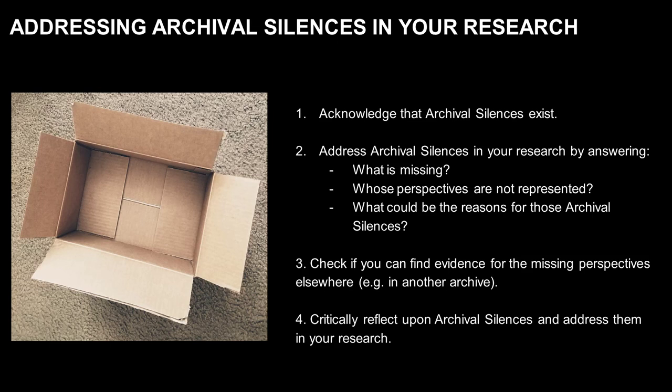So how should you address archival silences in your research? First, you'll need to acknowledge that they exist. When working with primary source materials in special collections, make sure that you do not limit your analysis to the materials you come across in our collection. Sometimes it can be more important to ask yourself: What is missing? Whose perspectives are not represented? And what could be the reasons for those archival silences? Also, check if you can find evidence of the missing perspectives elsewhere — for example, collected by another archive or through a community organization.